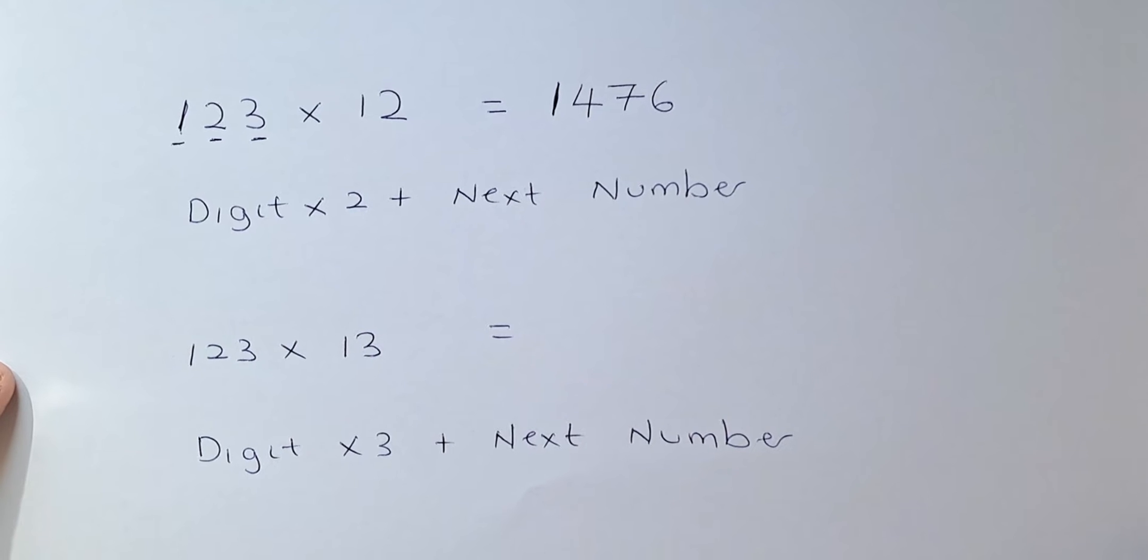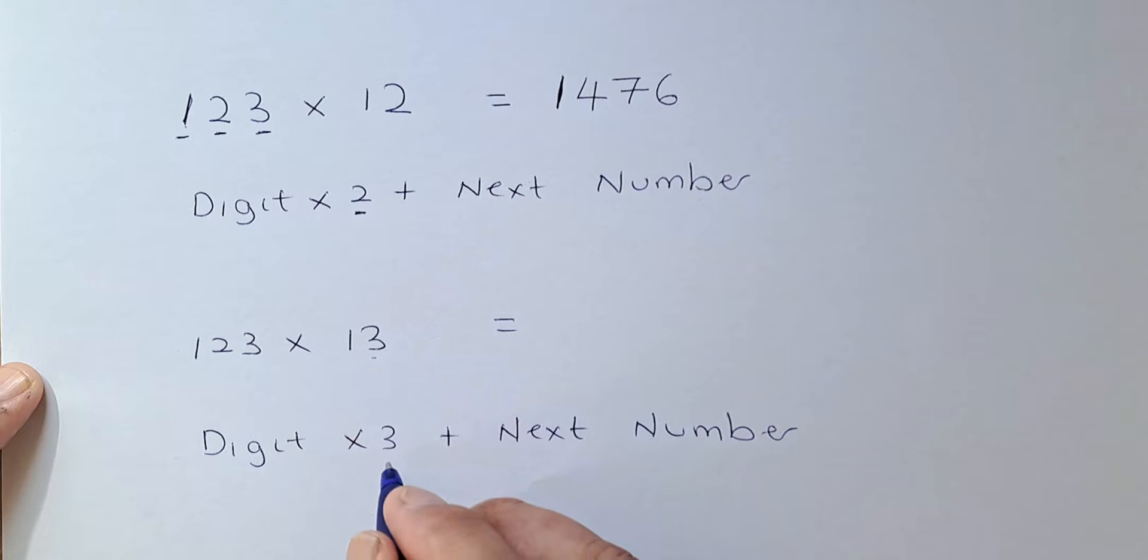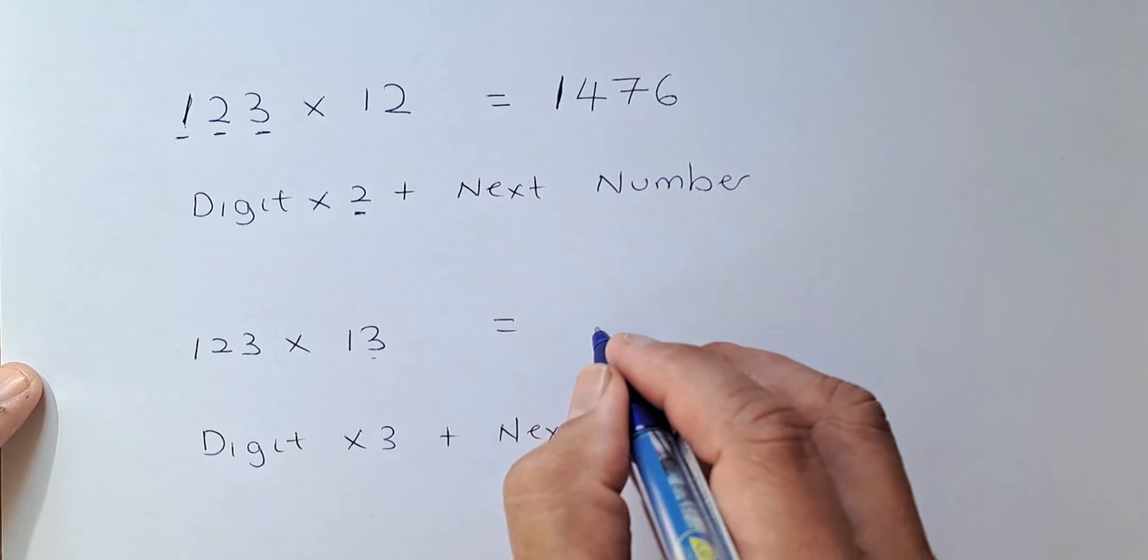Similarly, we can do the same thing for 13. Instead of multiply by 2, because it's 13, we're going to multiply by 3. So let's go again. The first digit will always be the same.